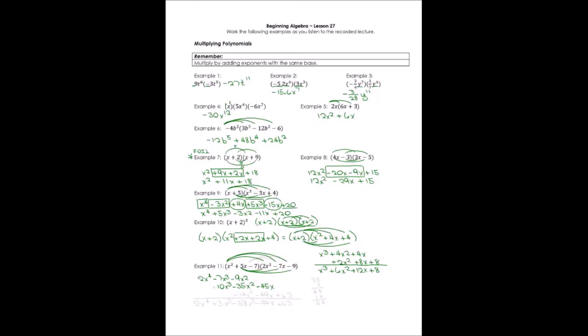Finally, multiplying by negative 7: negative 7 times 2x squared gives negative 14x squared; negative 7 times negative 7x gives positive 49x — written under the x terms. Wait, negative 7 times negative 7x is actually negative 49x. And negative 7 times negative 9 gives positive 63. Combining x terms: negative 45x minus 49x gives negative 94x.